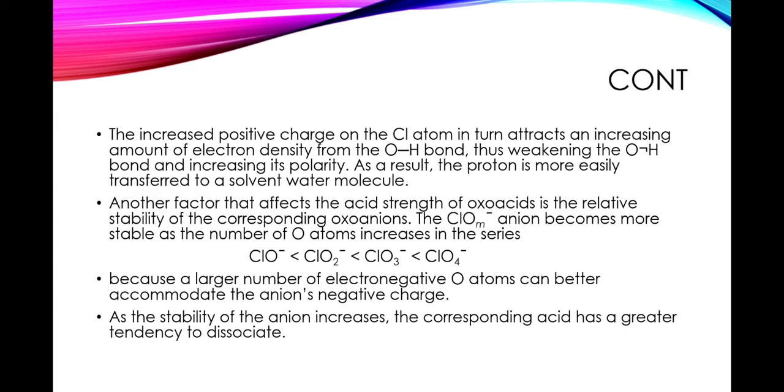Another factor that affects the acid strength of oxyacids is the relative stability of the corresponding oxoanions, ClO-m (where m represents the integers). The anion becomes more stable as the number of oxygen atoms increases in the series. For example, you can see in comparison, because a larger number of electronegative O atoms can better accommodate the anion's negative charge. As the stability of the anion increases, the corresponding acid has a greater tendency to dissociate.